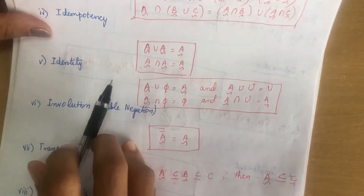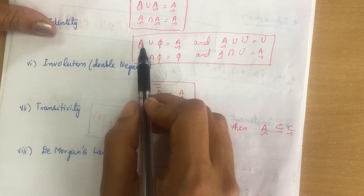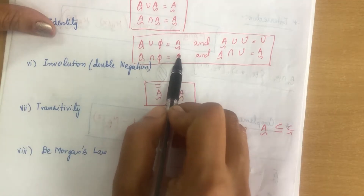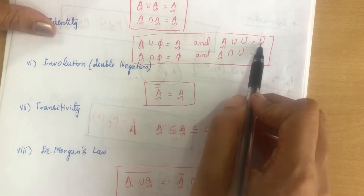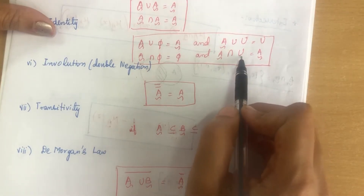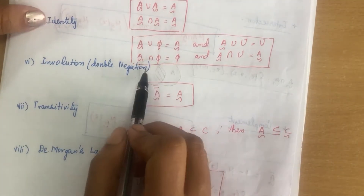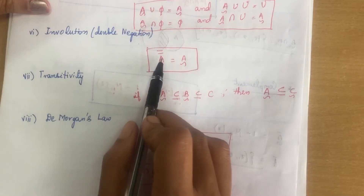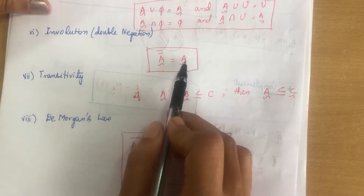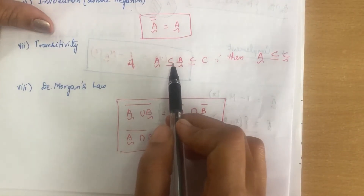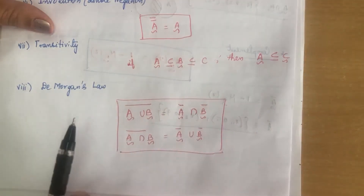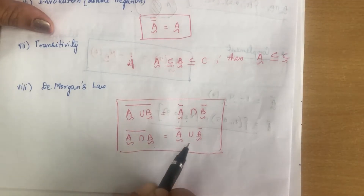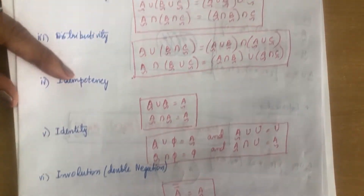Identity property: A ∪ ∅ = A; A ∩ ∅ = ∅; A ∪ X = X (universal set); A ∩ X = A. These are the same as in classical sets and hold for fuzzy sets too. Double negation (involution): the double complement of A gives back A itself. Transitivity: if A ⊆ B and B ⊆ C then A ⊆ C. De Morgan's law: the complement of (A ∪ B) equals Ā ∩ B̄, and the complement of (A ∩ B) equals Ā ∪ B̄. All these properties hold for fuzzy sets.